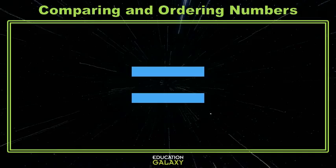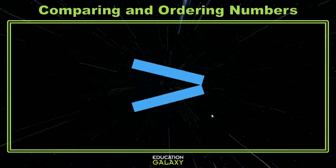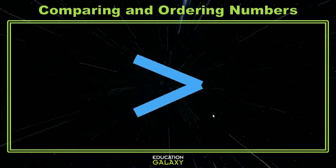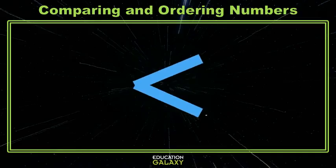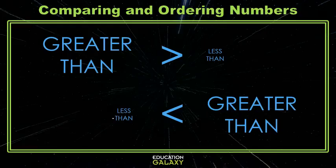But sometimes we see these other symbols, where it looks like somebody sat on one side of the equal sign. That means that the stuff on the left is no longer equal to the stuff on the right — that one of the values is greater than the other value, and one is less than the other value.